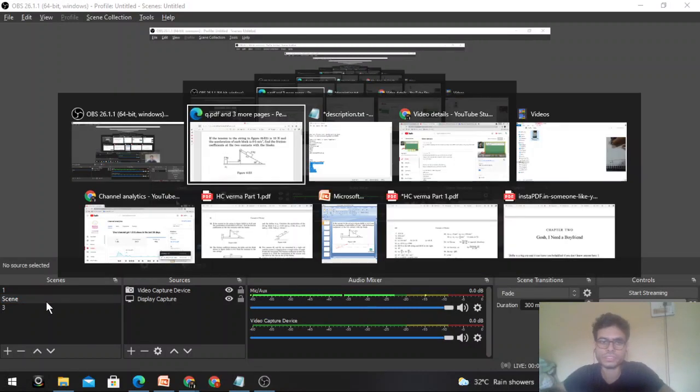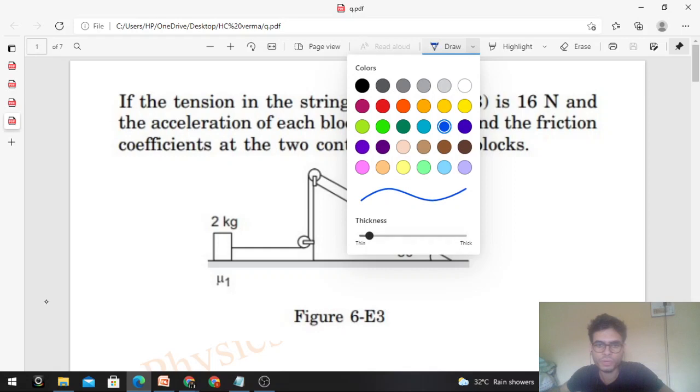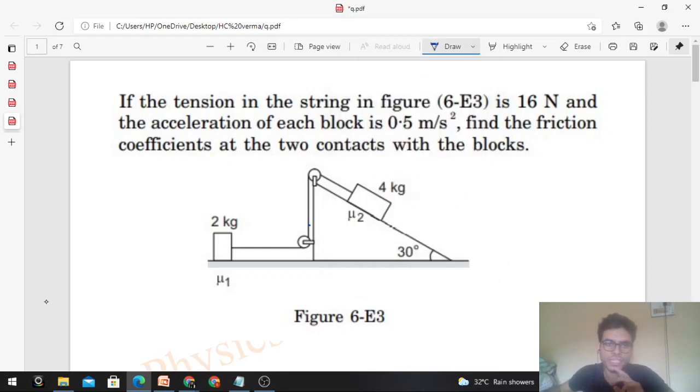Okay hi everyone, so today let's discuss one interesting problem from HC Verma. If the tension in the string in the figure is 16 Newton and the acceleration of each block is 0.5 meter per second squared, find the friction coefficients at the two contacts with the blocks. So these two blocks are given here, the tension is 16 Newton, and the acceleration of the two blocks is 0.5 meter per second squared, and we have μ1 and μ2 values.